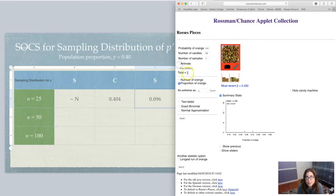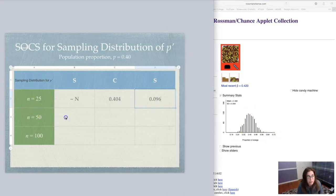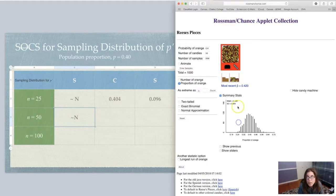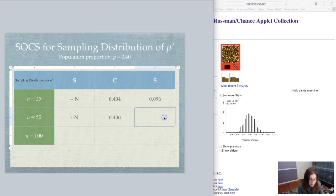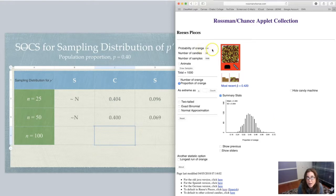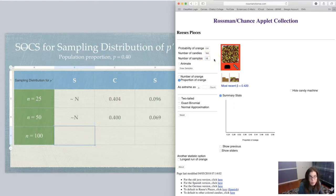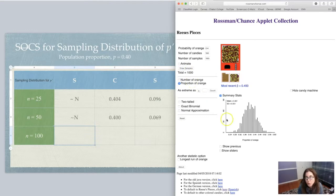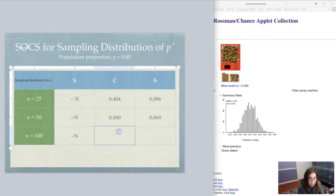Let me run 998 more for a total of 1000 samples at n=50. That's looking pretty bell-shaped to me — approximately normal. The mean was 0.400 and the standard deviation was 0.069. Then I'll bump up to n=100 with a thousand samples. Still approximately normal, center at 0.401, and standard deviation was 0.051. So you can see the mean stays close to 0.40 and the standard deviation is getting smaller.